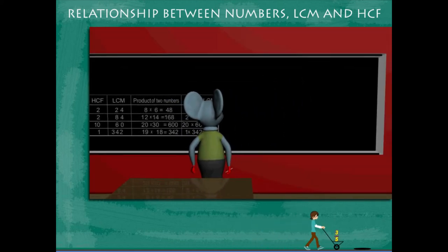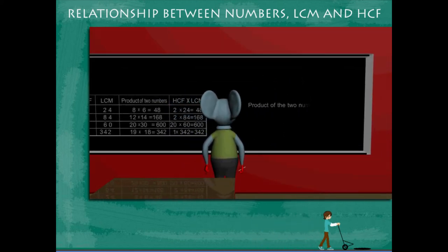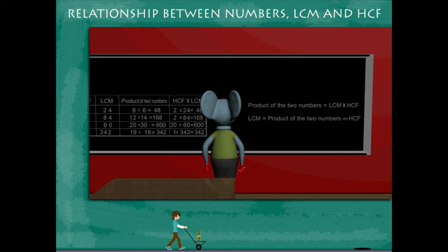Toby now explains that the product of two numbers is equal to the product of the LCM and HCF, or LCM is equal to the product divided by the HCF.